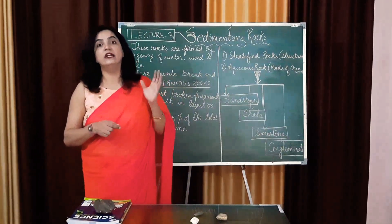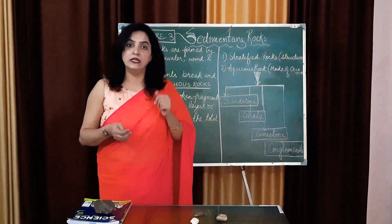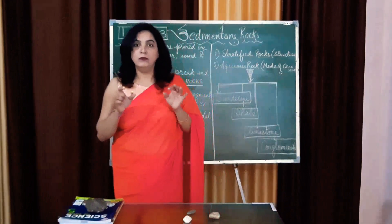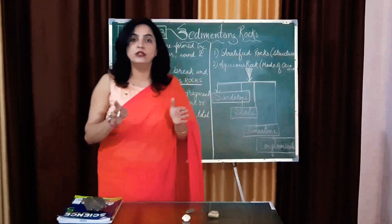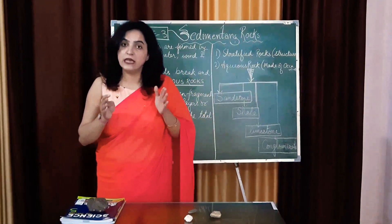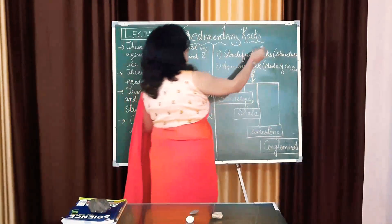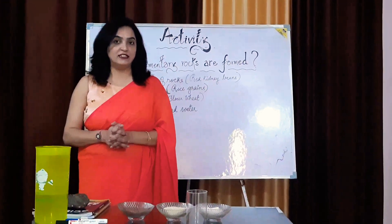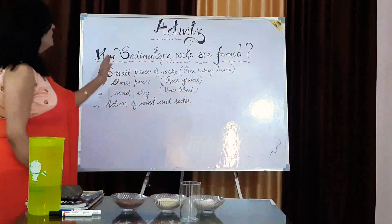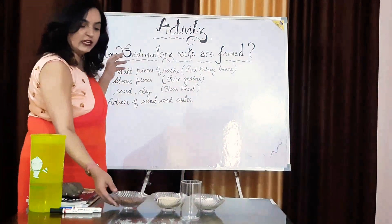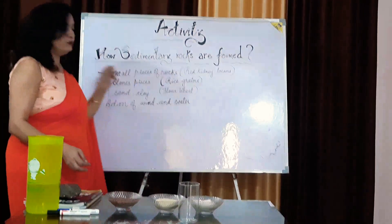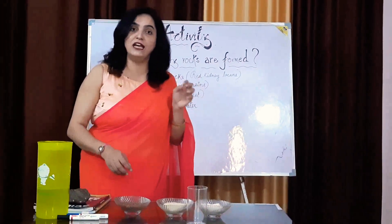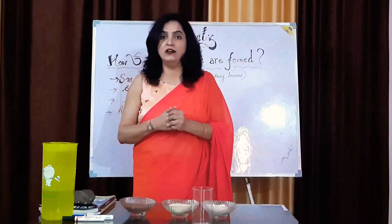You may remember I gave you one demonstration or activity for the igneous rocks. In the same way, I have arranged one for sedimentary rocks also, because I want you to understand very clearly. Maybe by words you don't understand, but I will show you something so you can clearly understand what sedimentary rocks are and what the process of formation is. So come with me — we will have one activity of sedimentary rocks. For the small pieces of rocks, I have taken red kidney beans. For small stone pieces, I have taken rice grains. Sand and clay are represented by wheat flour. These are the things available with me, and don't think I am going to cook something — it is just an activity to make things clear.